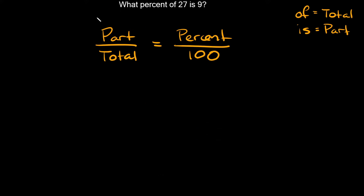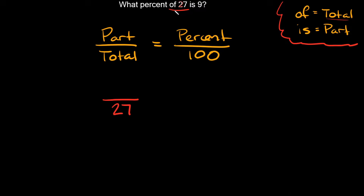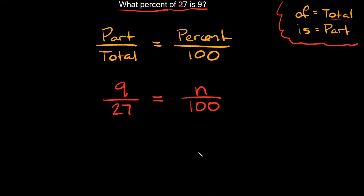This problem says 'What percent of 27 is 9?' Write down your formula. 'Of 27' — 'of' means total, so 27 is the total and goes on the bottom. 'Is 9' — 'is' means part, so 9 is the part and goes on top. We don't know the percent — that's what we're looking for — so I'll use the variable n over 100. Remember, 100 always stays the same.